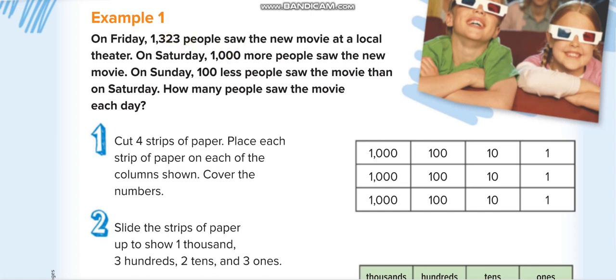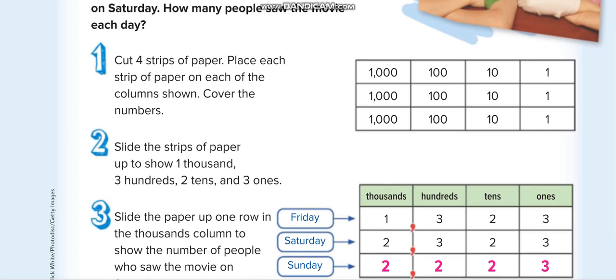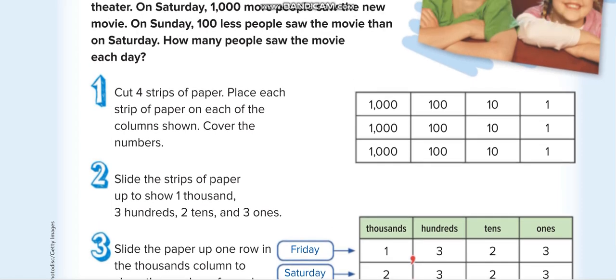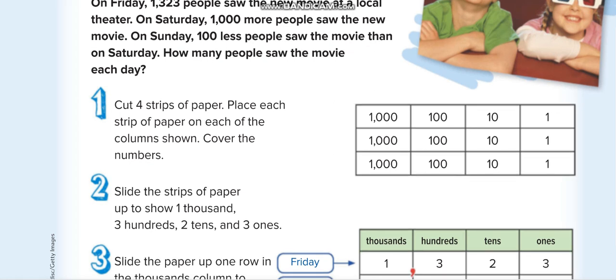So this one plus 1,000: 1,323 plus 1,000 becomes 2,323. Here it is, 2,323. On Friday 1,323, on Saturday 1,000 more, so 2,323. Then on Sunday, 100 less people saw the movie.